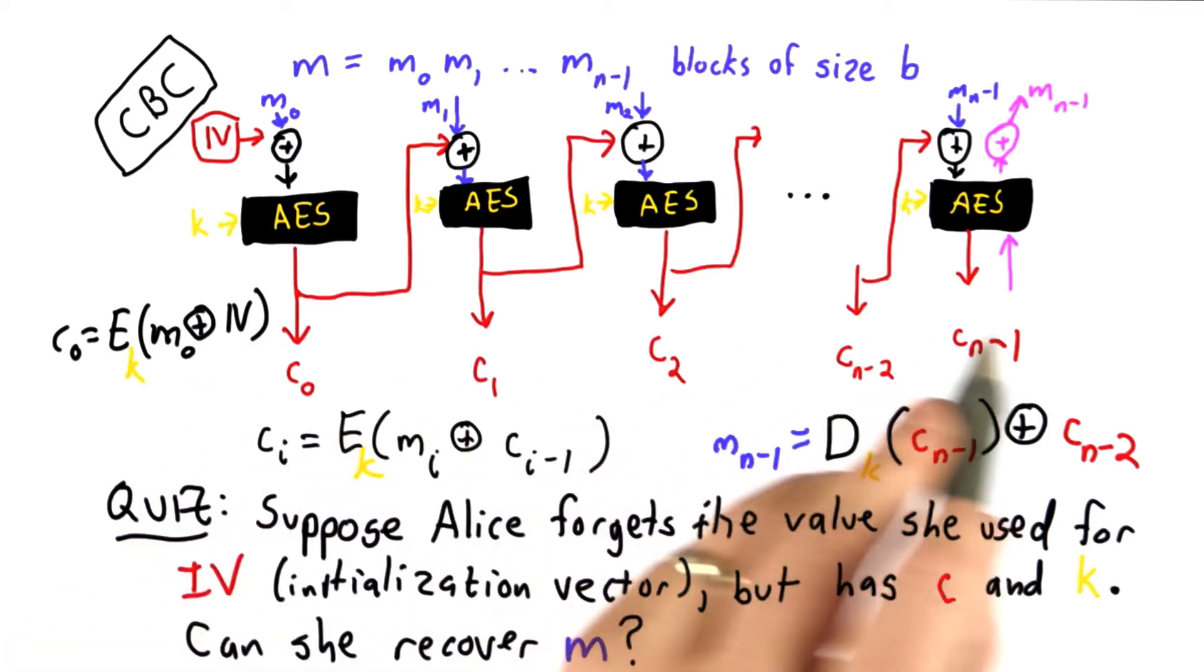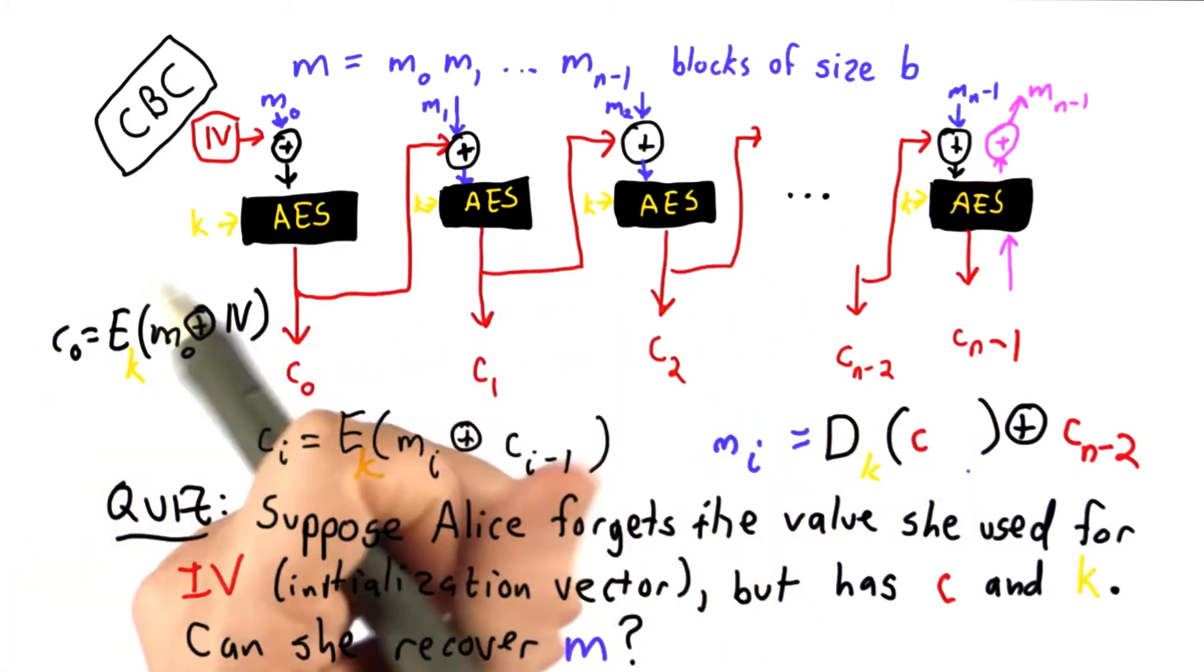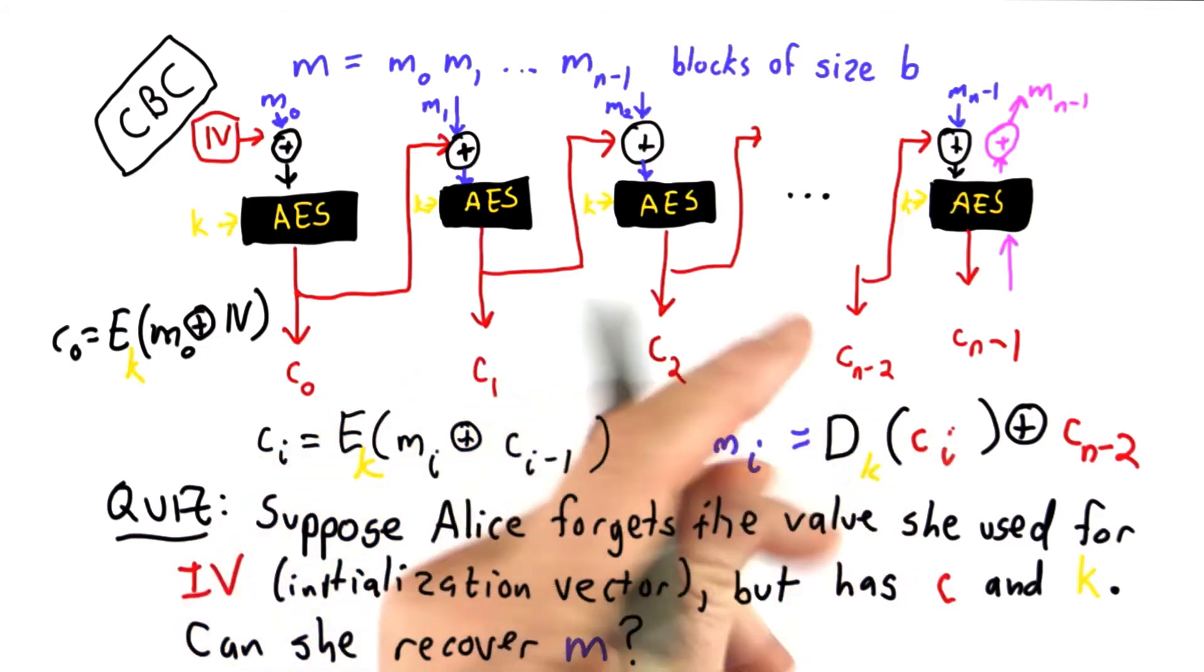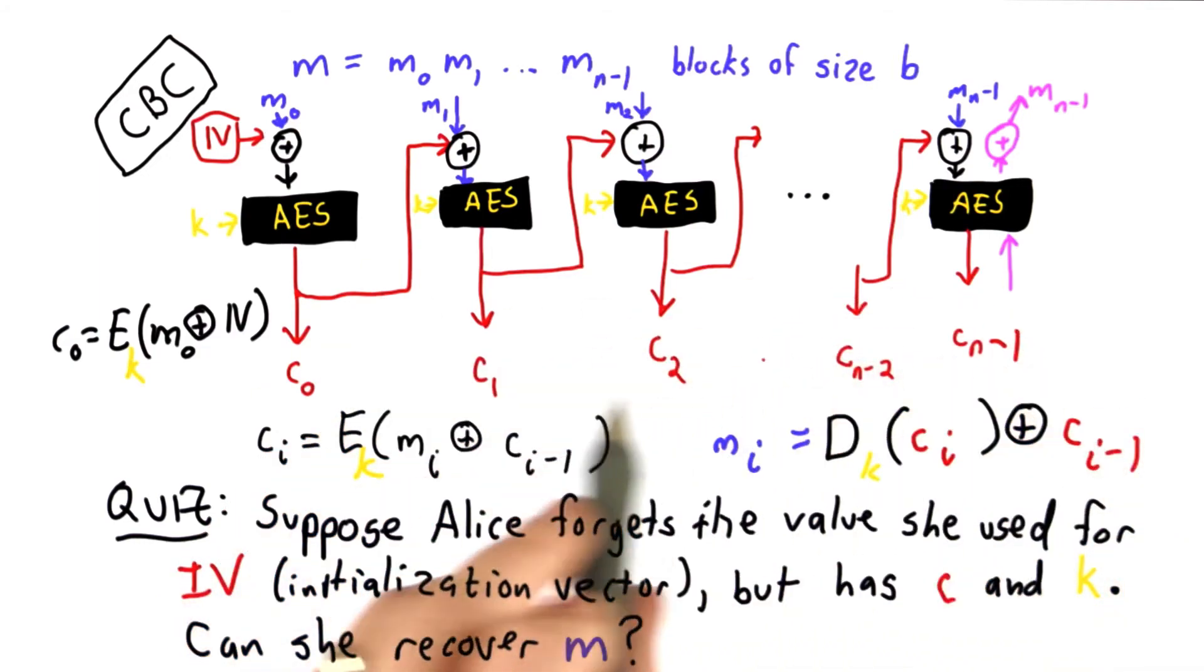Remember, we have to decrypt, we start with all the ciphertext blocks. This is how we decrypted the last block, but each block is the same. To get message block i, we need to decrypt ciphertext block i, and XOR that with the previous ciphertext block. We can do that for all the blocks,